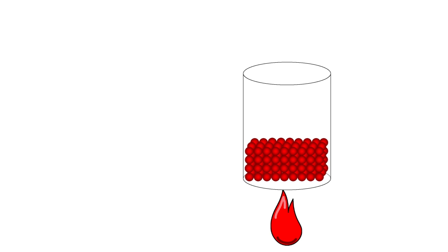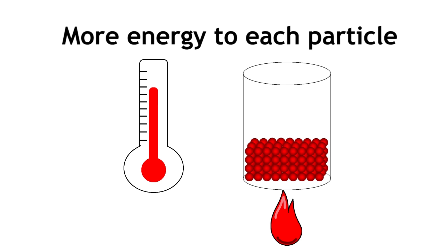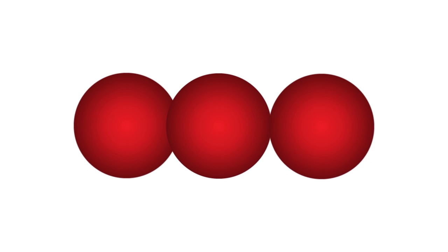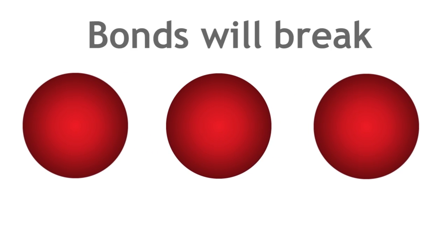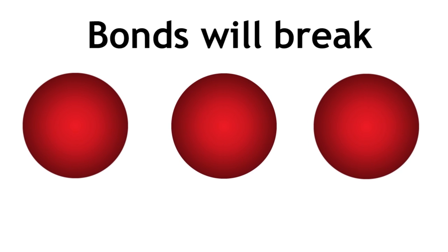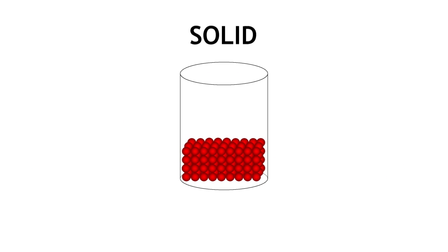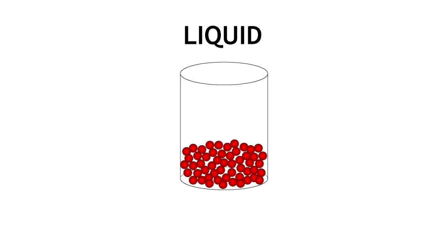Imagine heating the solid, raising its temperature and giving each particle more energy. The particles vibrate more and more until they have enough energy to break out of the lattice. The bonds will break and the atoms begin to move around much more easily. The substance will change into a liquid.